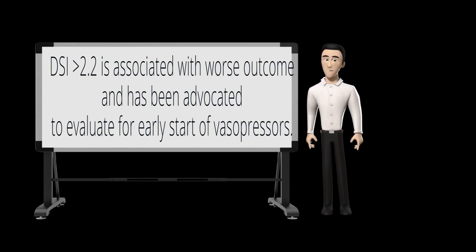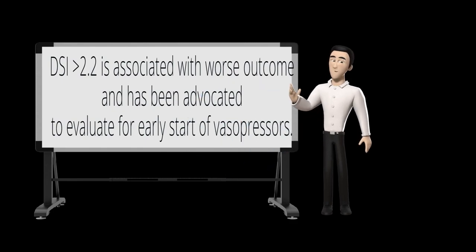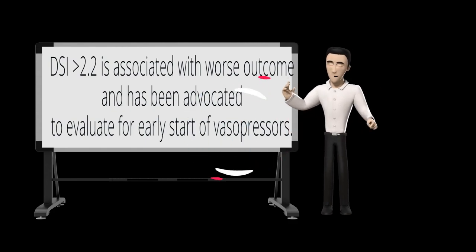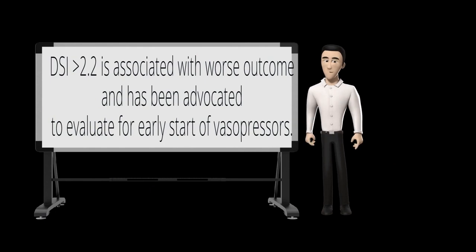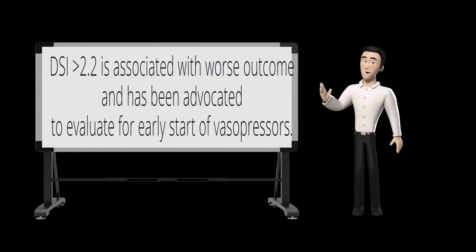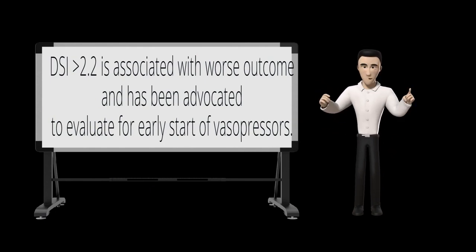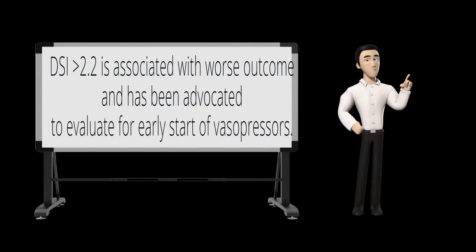A diastolic shock index greater than 2.2 is associated with worse outcome and has been advocated to evaluate for early start of vasopressors.